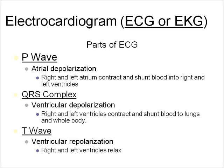Electrocardiogram — ECG or EKG. Parts of the ECG: the P wave represents atrial depolarization, when the right and left atria contract and shunt blood into the right and left ventricles. The QRS complex is ventricular depolarization — during that time the right and left ventricles contract and shunt blood to the lungs and the whole body. The T wave is ventricular repolarization, when the right and left ventricles relax.